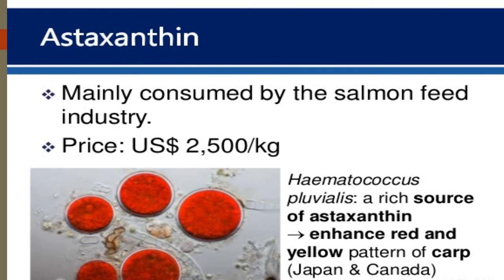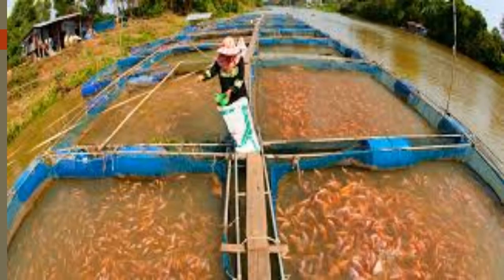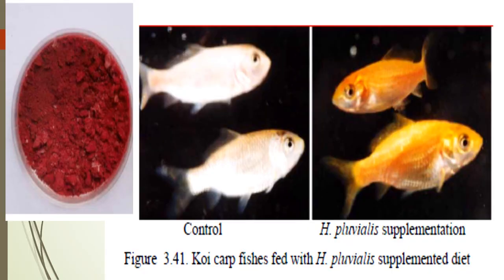Astaxanthin is mainly consumed by the salmon feed industry, priced at 2,500 US dollars per kg. Haematococcus pluvialis is a rich source of astaxanthin and enhances the red and yellow pattern of carp. In the case of koi carp fishes fed with a Haematococcus pluvialis-supplemented diet, a change in the flesh color of the fish has been observed.